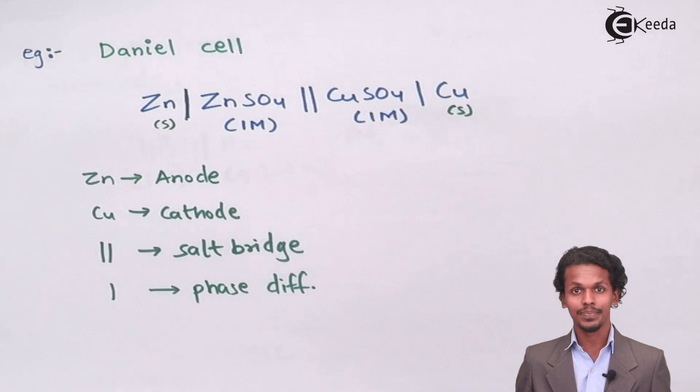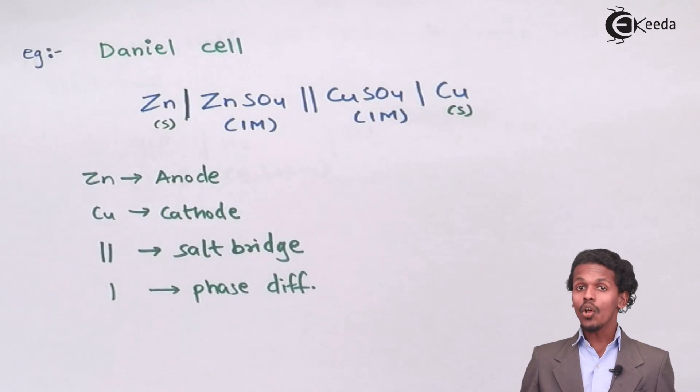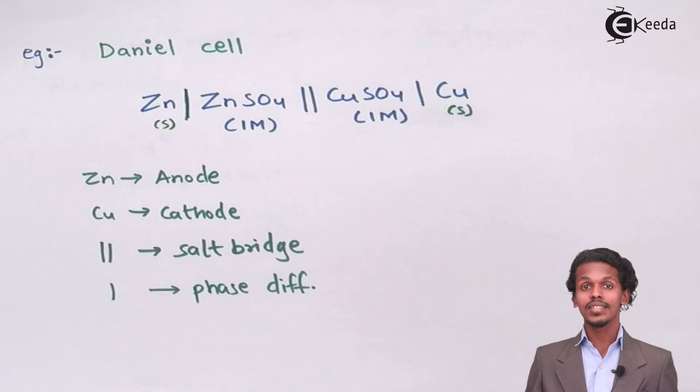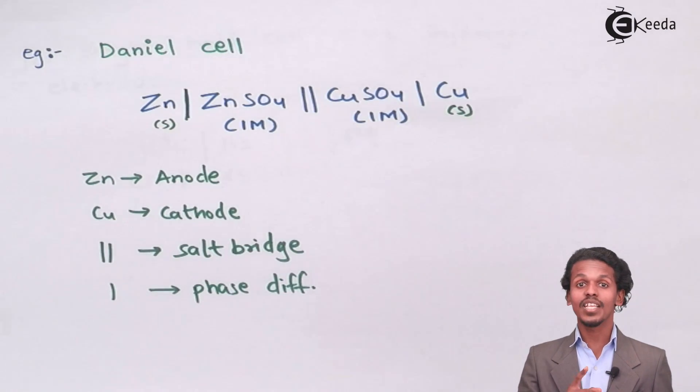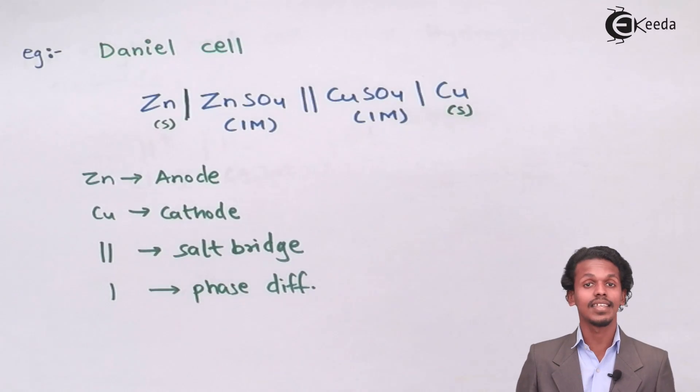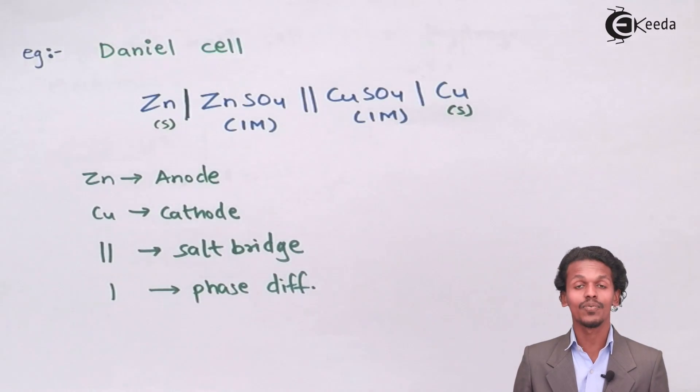For the other half cell, CuSO₄ is also present in aqueous solution, so its concentration of 1 molar is mentioned. Since CuSO₄ is an aqueous solution while copper is a solid electrode, the two are of different phases, and hence a single vertical line represents the phase difference between solid copper and aqueous CuSO₄. This is how we represent the cell formula for a galvanic cell.